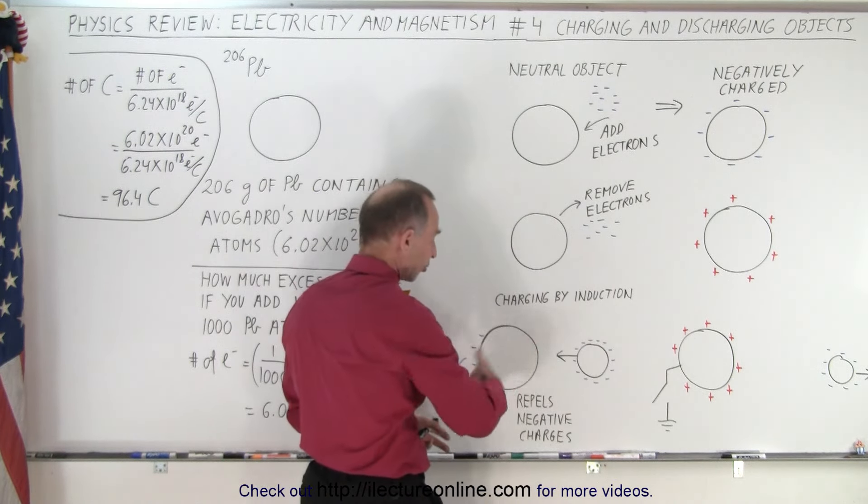Now, if we want to know how much charge that is, we take the number of electrons and divide by the number of charges per coulomb. And when we do that division, we realize we would end up at 96.4 coulombs, which is an enormous amount of charge.